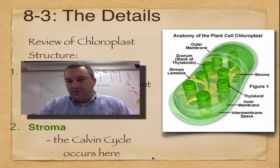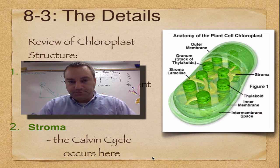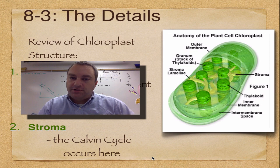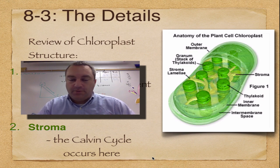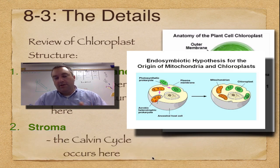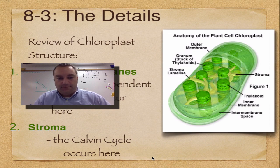Chloroplasts are also rather unique. They're very similar to a mitochondrion in the fact that they have more than one membrane, they have their own DNA, and they go through a division very close to what a prokaryotic cell or a bacterium would do. So it's believed that these guys evolved from photosynthetic bacteria that were brought into a cell millions upon millions of years ago. And that's called the endosymbiont theory.